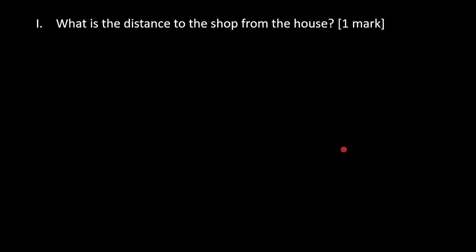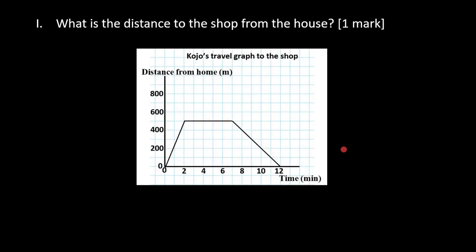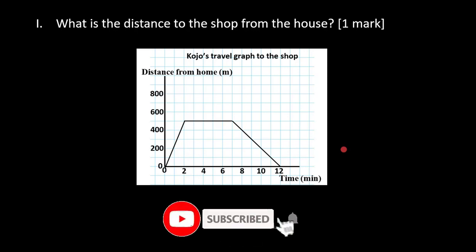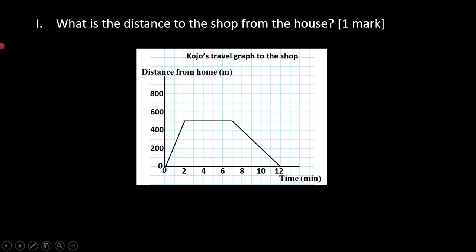Now let's come to the solution. We're tackling the first question — what is the distance of the shop from the house? Let's introduce our graph. The vertical axis represents the distance from home, and the horizontal axis represents the time in minutes. At the start of the journey he started at point zero, which is simply his home.